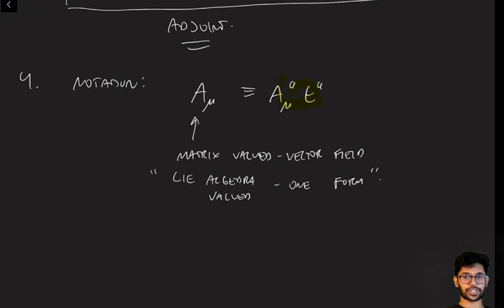That concludes our discussion of non-Abelian gauge invariance. In the next video, we're going to figure out how to use this to actually build an action which is invariant. We're going to understand how to build a field strength which is invariant under this, and then write down the dynamics of the non-Abelian gauge field itself.